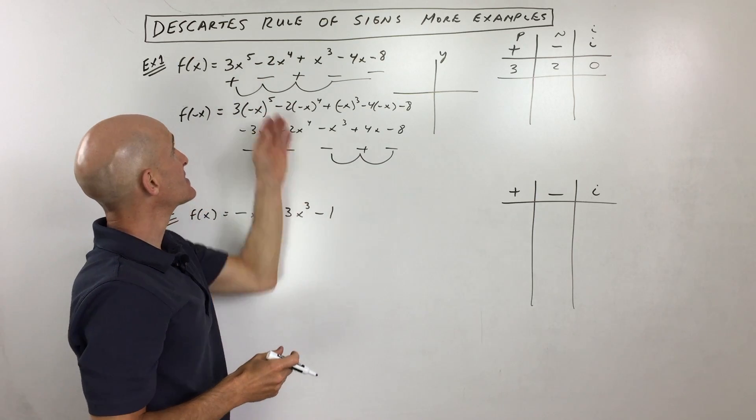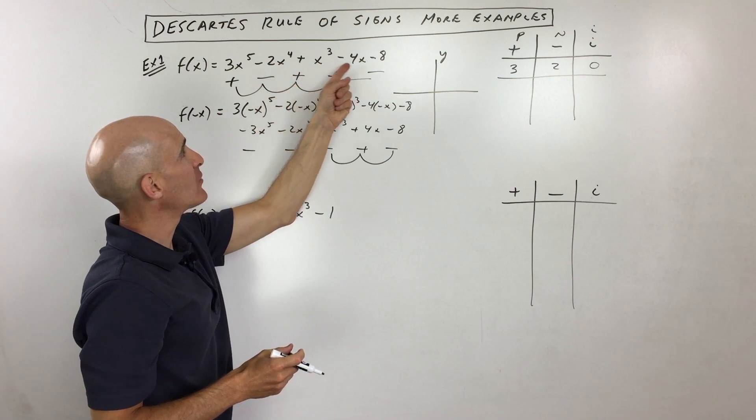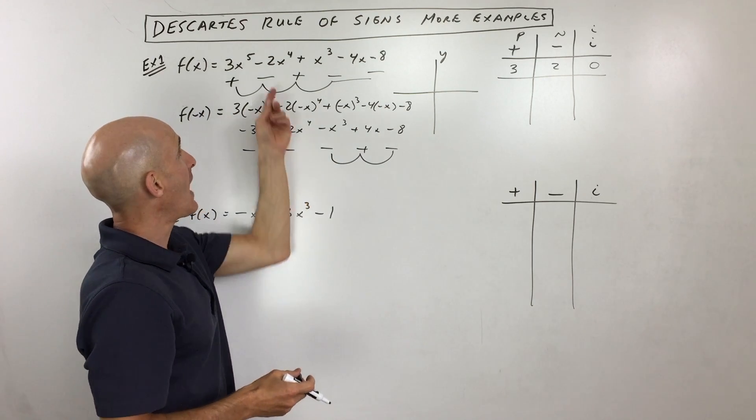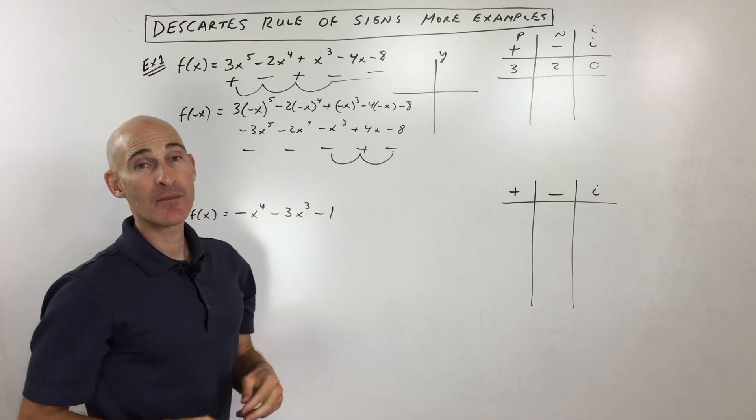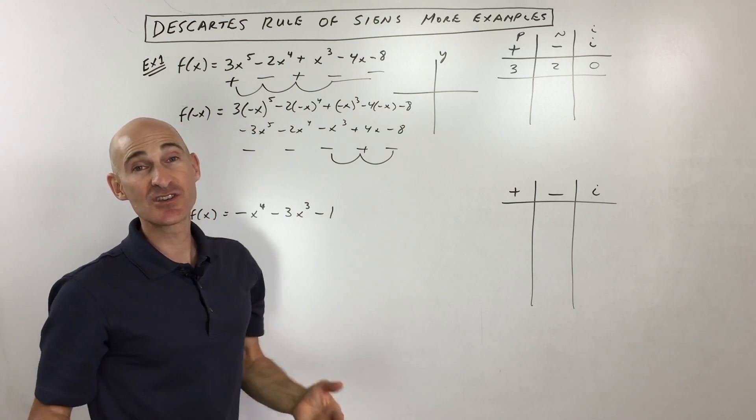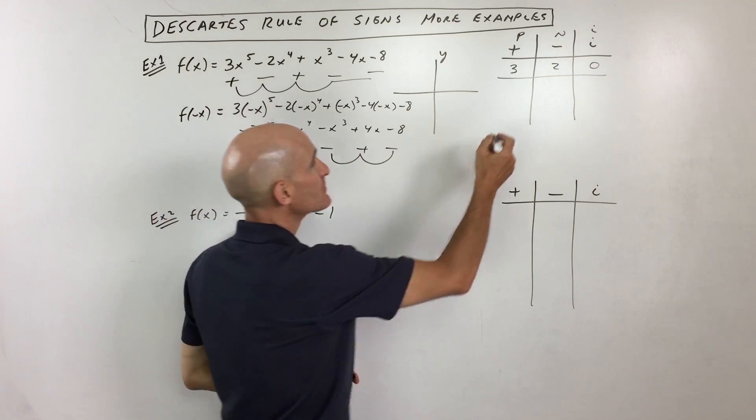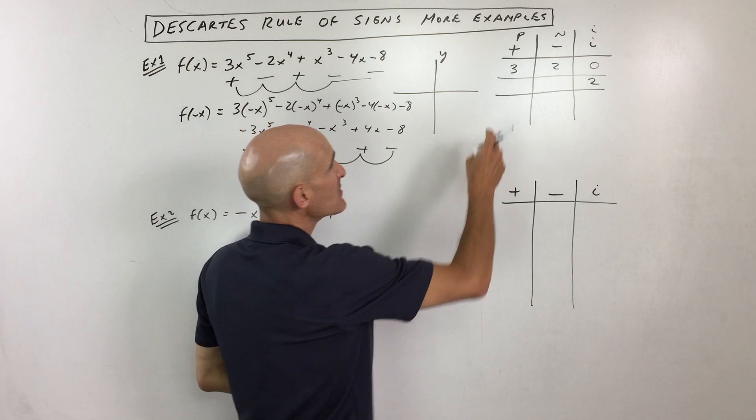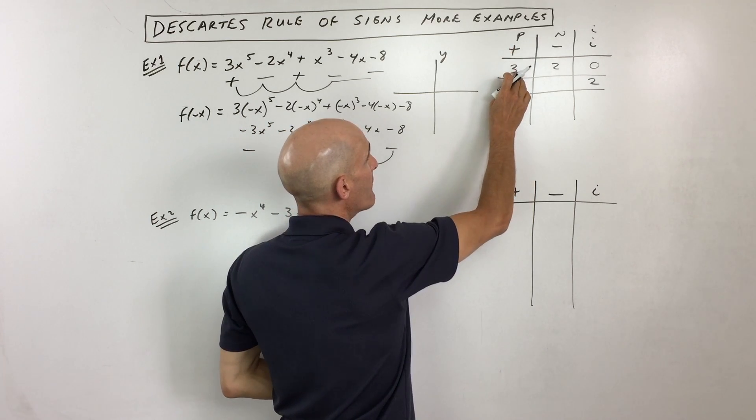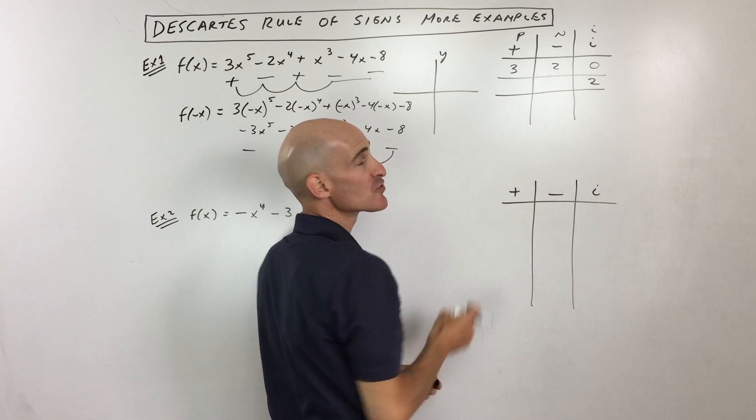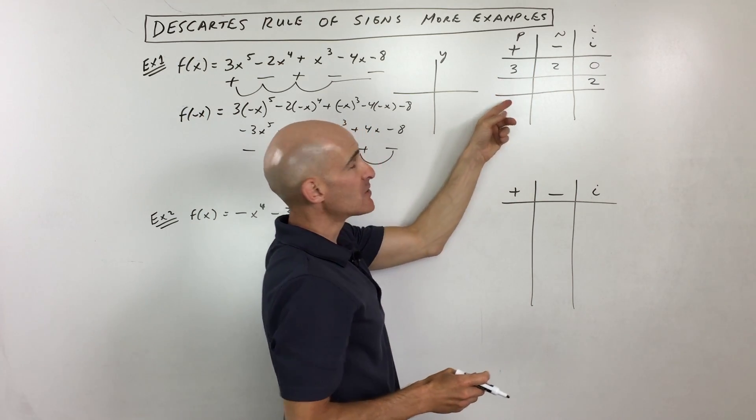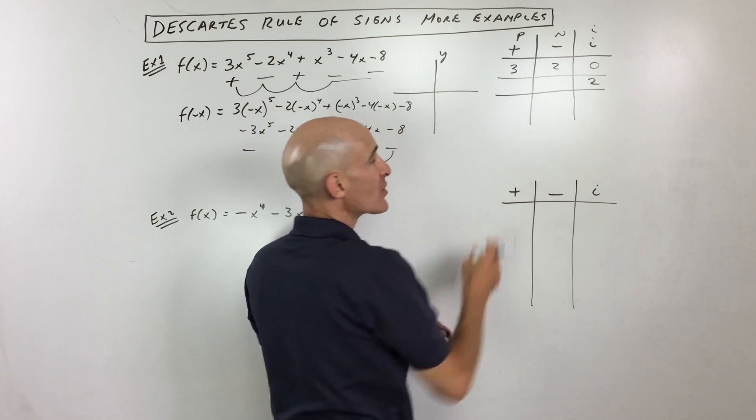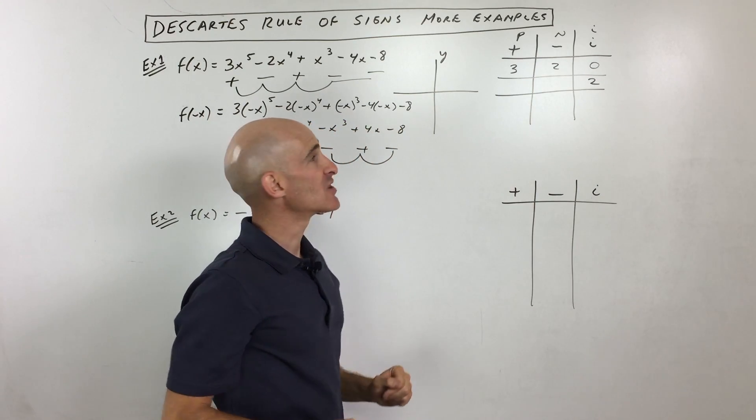Now the other thing that's interesting is that if the coefficients of your polynomial are all real, meaning there's none that are imaginary, then what happens is if you have any imaginary zeros, they come as conjugate pairs. So what that means is, for example, if we had two imaginary zeros, then what happens is we have to decrease the number of positive zeros by 2 or the number of negative zeros by 2. So we always go down by 2, 4, 6, 8 by an even number, an even amount, because of these imaginary ones coming in conjugate pairs.